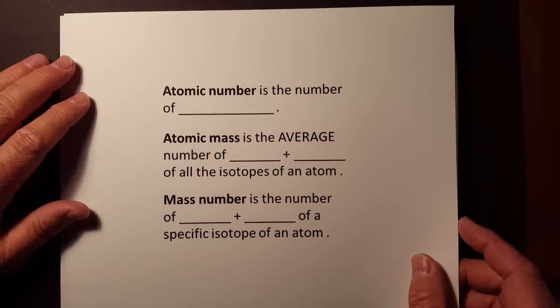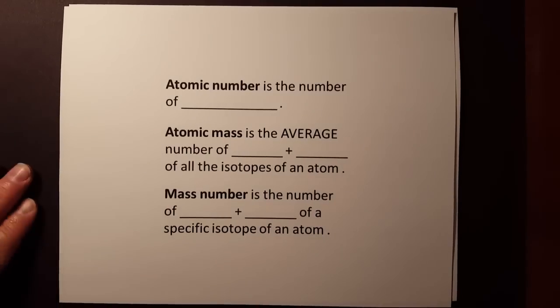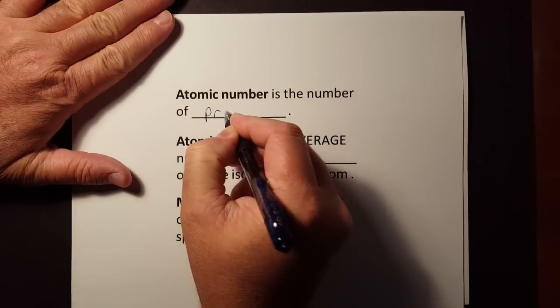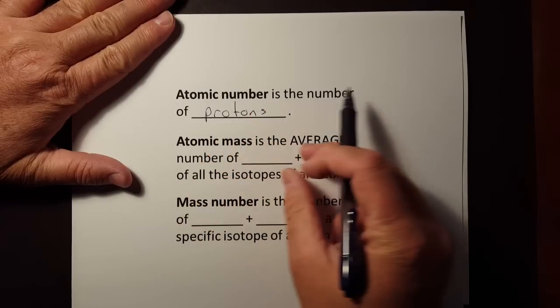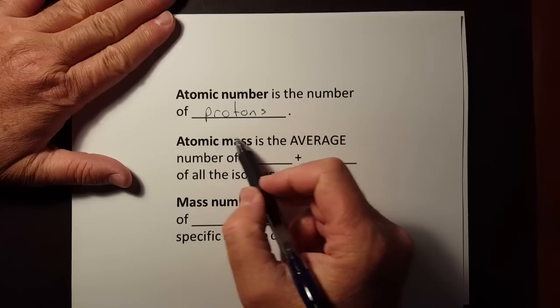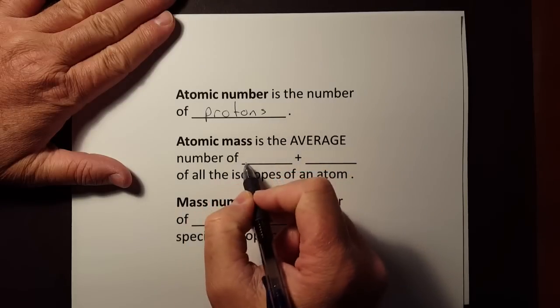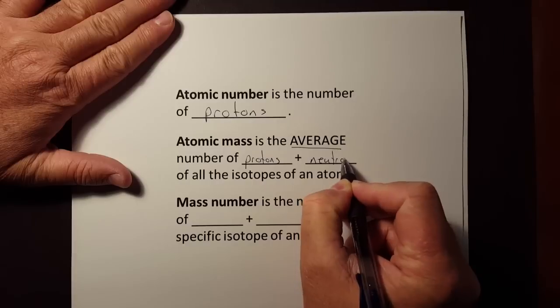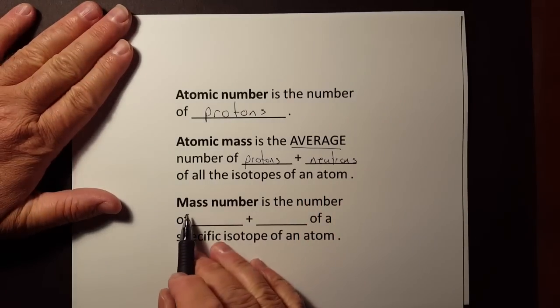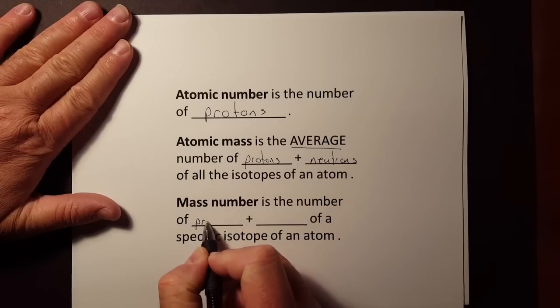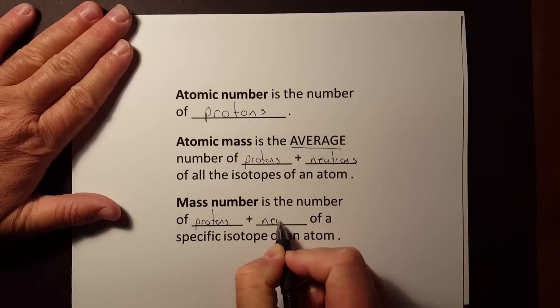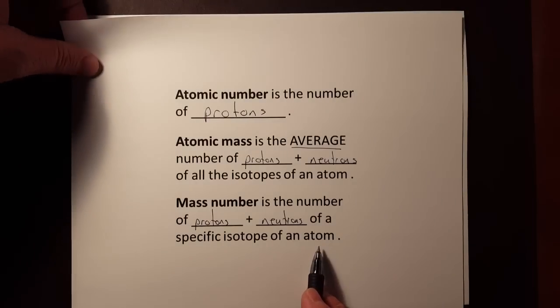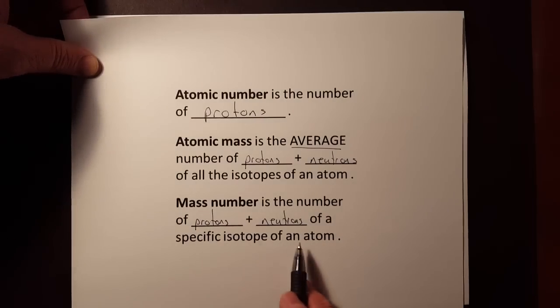The first thing that we're going to need to know, make sure that we're clear on some of our terms, is that the atomic number is the most important thing that we need to know about any one particular element, and that is the number of protons. The atomic mass, I say mass because it's the long one that has all of the decimal places on it, is the average number of protons plus neutrons of all the isotopes of an atom. Not to be confused with the mass number. The mass number is the number of protons plus neutrons, but this time only of one particular isotope of the atom. Its mass number is protons plus neutrons.